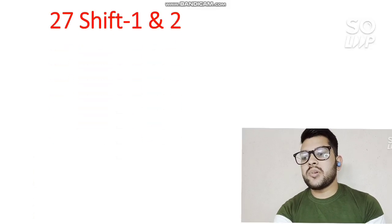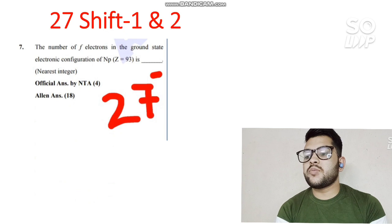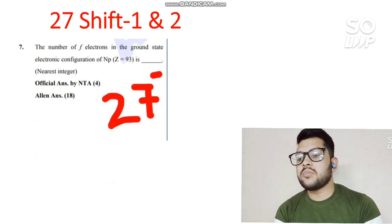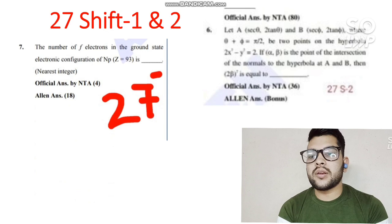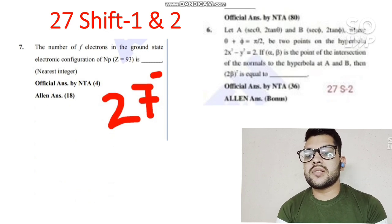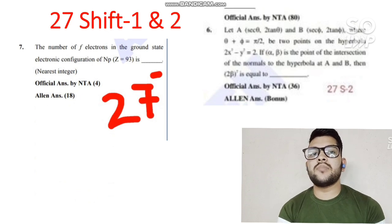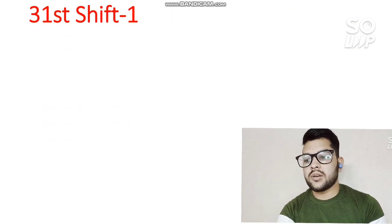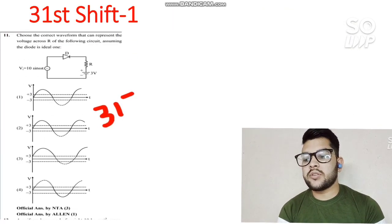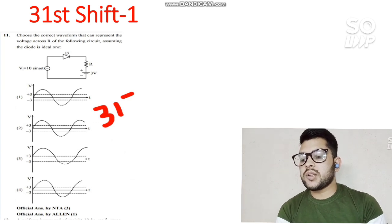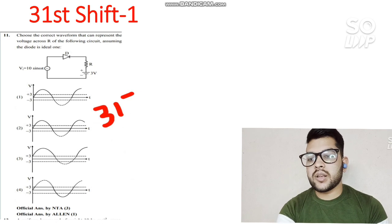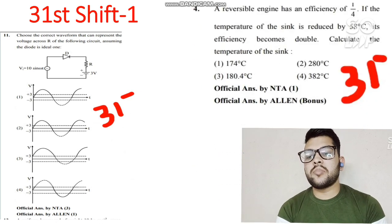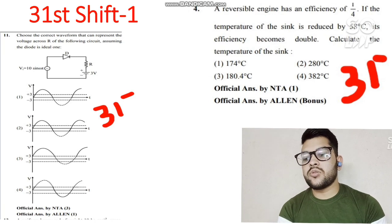Here is 27th August Shift 1 and Shift 2. Question number 11 related to Physics — the official answer by NTA is 3, but the official answer by LN is 1. I hope this question will be overturned; if you provided option 1 you will get the marks. The next question — the official answer by NTA is 1, but I claim it as a bonus question. If you attempted this question negatively, don't worry — you will not get negative marks.